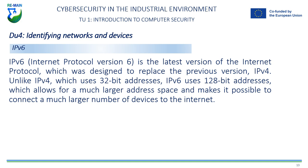However, despite its many advantages, IPv6 adoption has been slow due to a number of factors, including lack of backward compatibility with IPv4, lack of support in some operating systems and network devices, and the complexity of deployment and transition. As the number of devices connected to the internet continues to increase, IPv6 adoption becomes increasingly important to ensure that there are enough IP addresses for all devices and to ensure the continuity and security of the global internet.